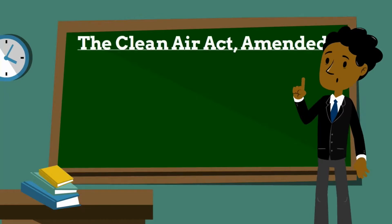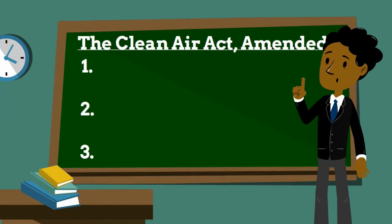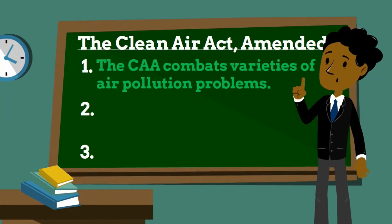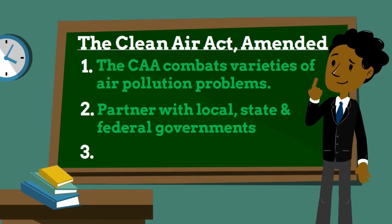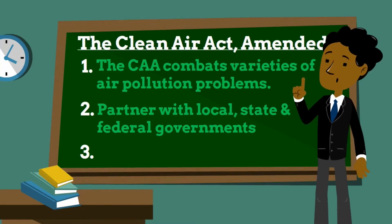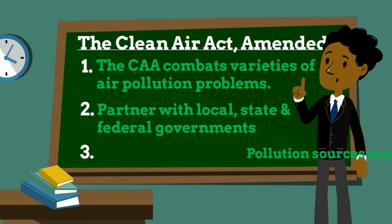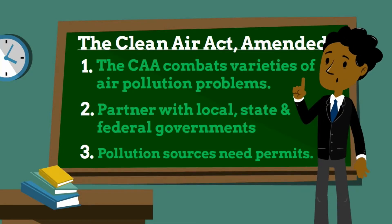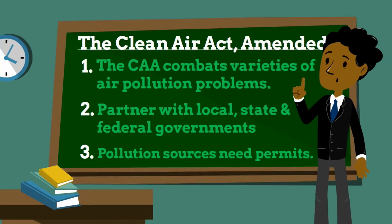Here are some facts regarding the Clean Air Act amendments. U.S. Congress designed the Clean Air Act to combat a variety of air pollution problems and to tackle emerging pollution threats. The Clean Air Act calls for states, local, tribal, and federal governments to work in partnership to clean the air. Lastly, the Clean Air Act requires major stationary sources, specifically through these amendments in 1990, and certain other sources subject to federal standards to obtain Clean Air Act operating permits that contain and assure compliance with all Clean Air Act requirements.